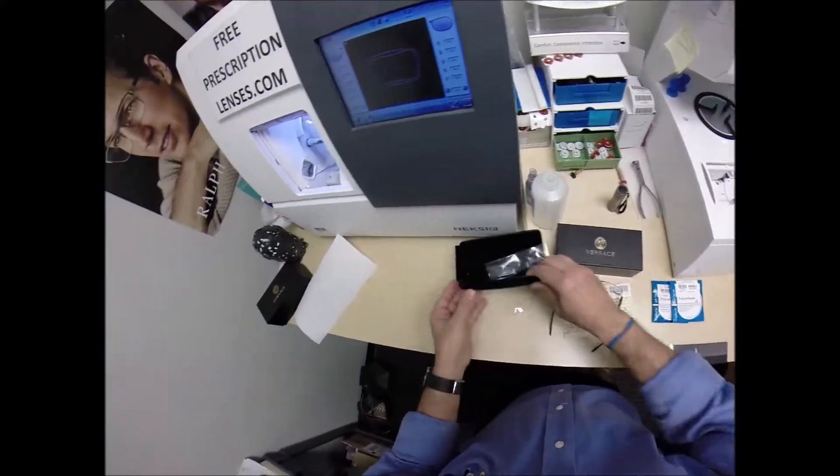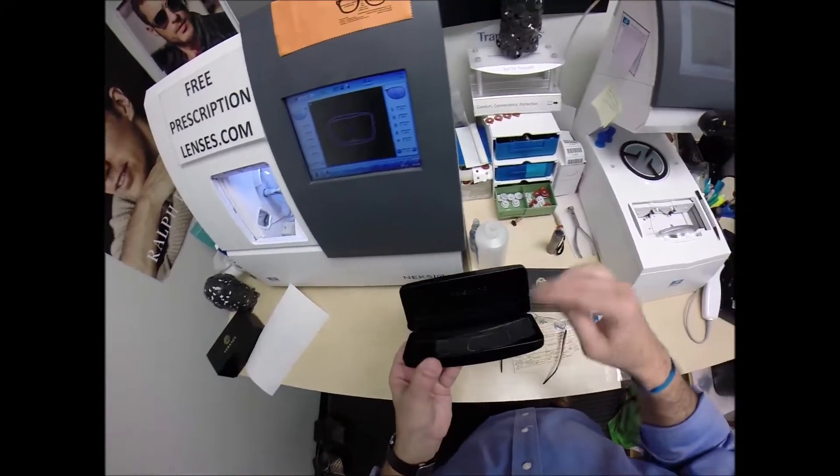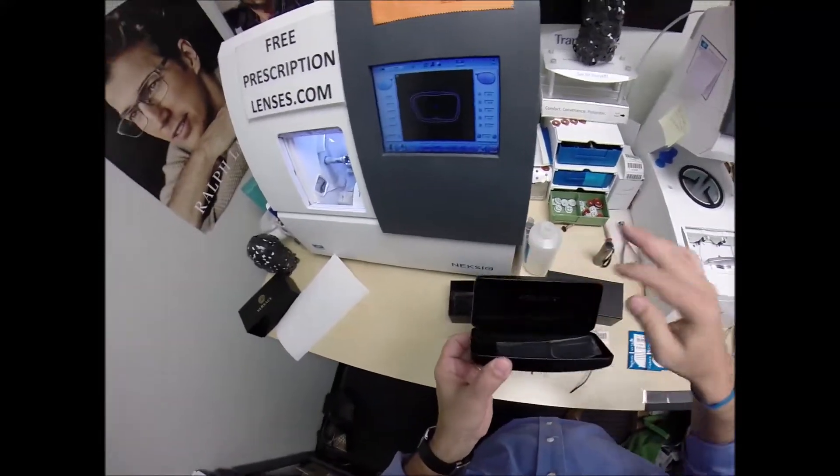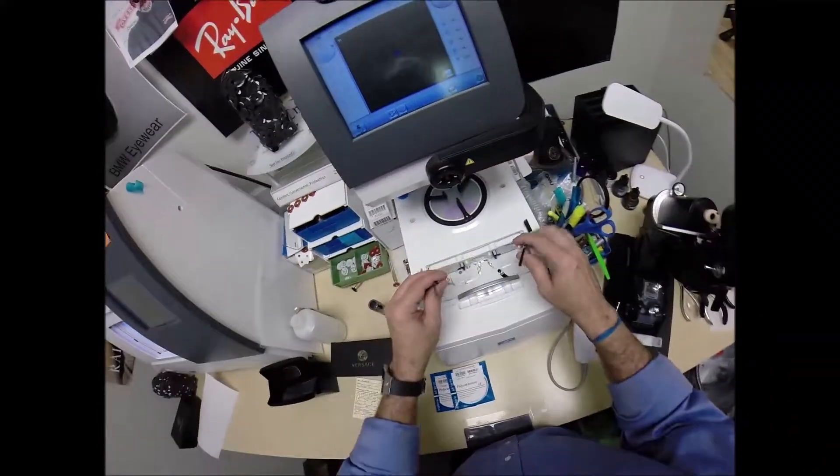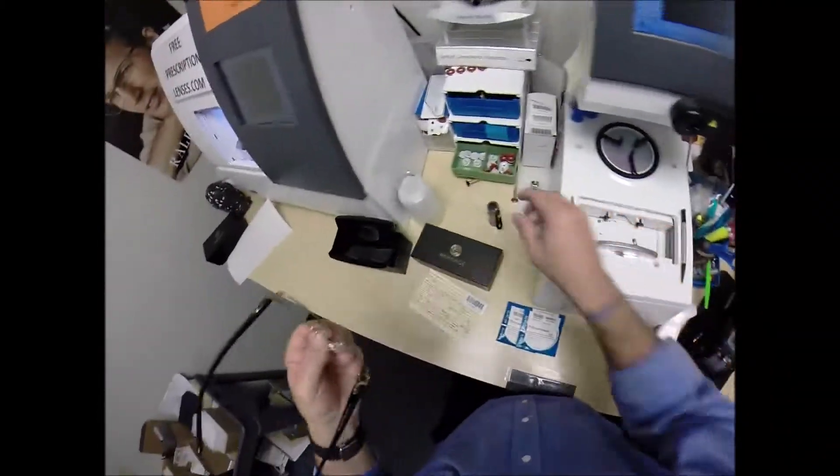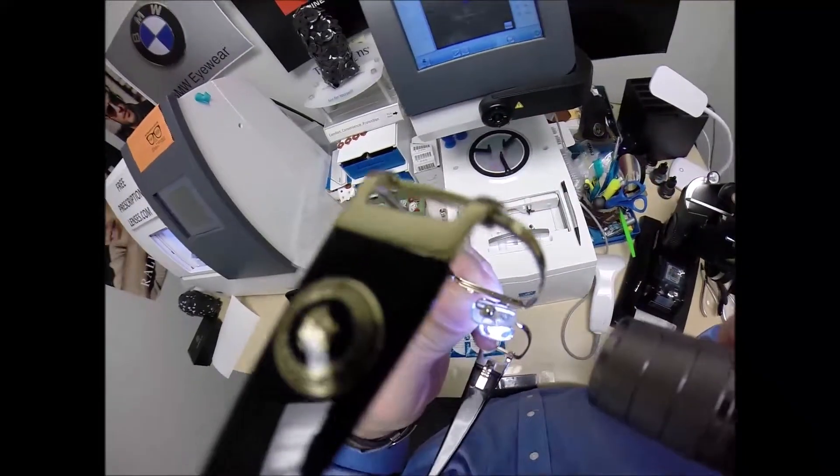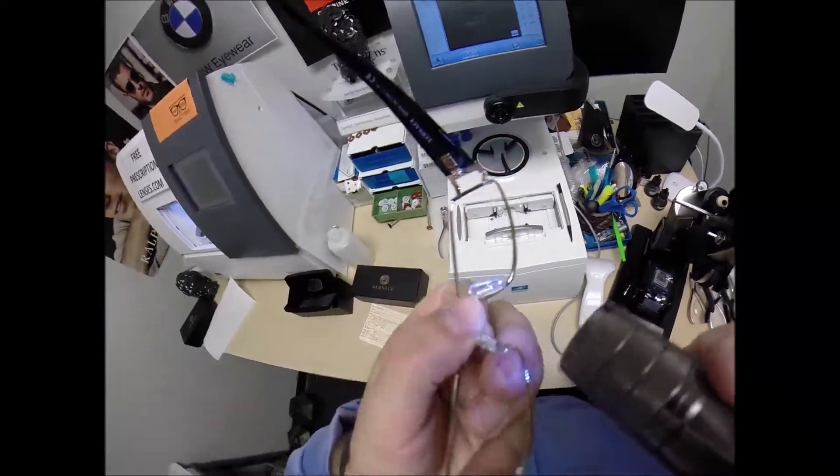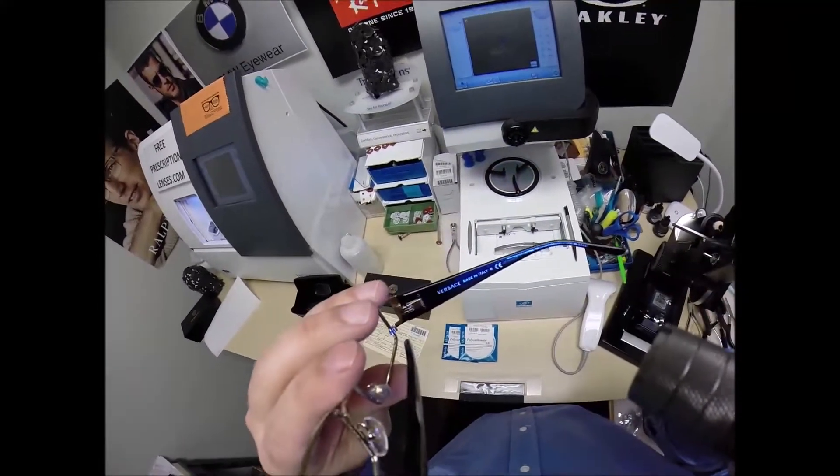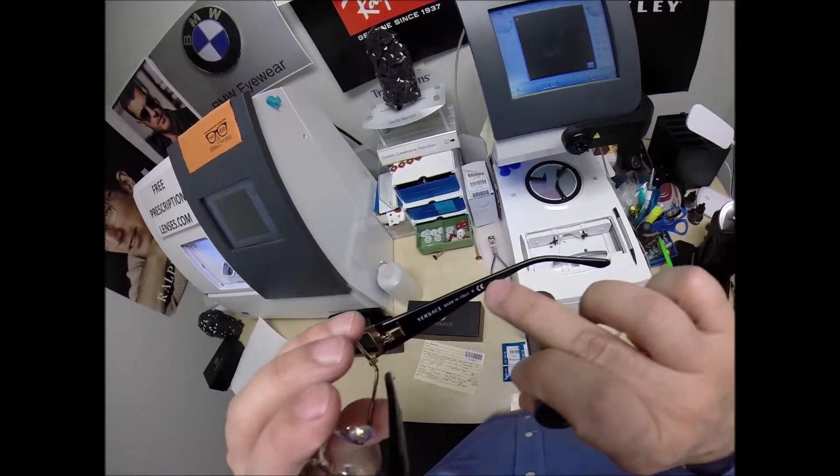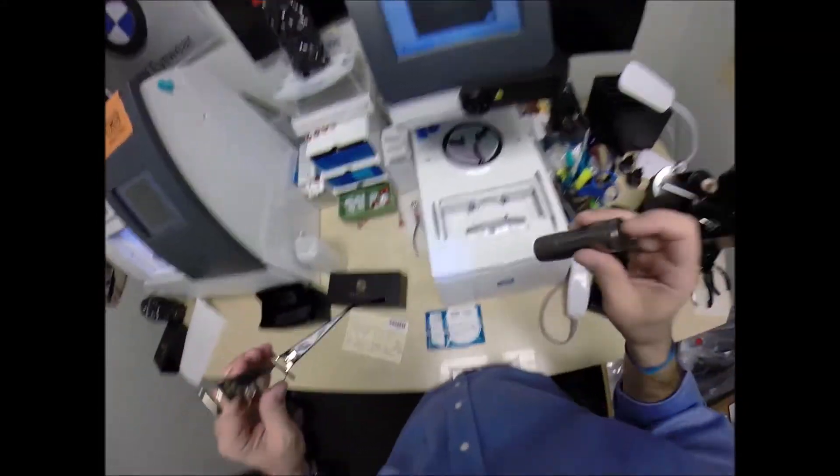I thought they had something engraved on the inside. I was going to say that is way too cool if they did. But I'm going to go ahead and put the frame. By the way, you got the Versace. Can you see this? You got the Versace nose pads on there. Even those say Versace. And of course all Versace's made in Italy. And you got the serial number right there on the end of the right temple.